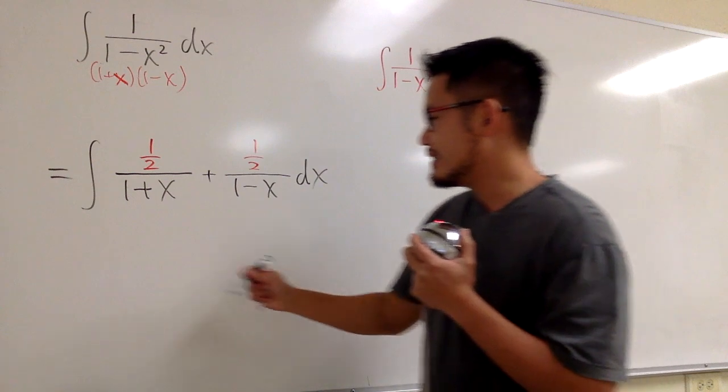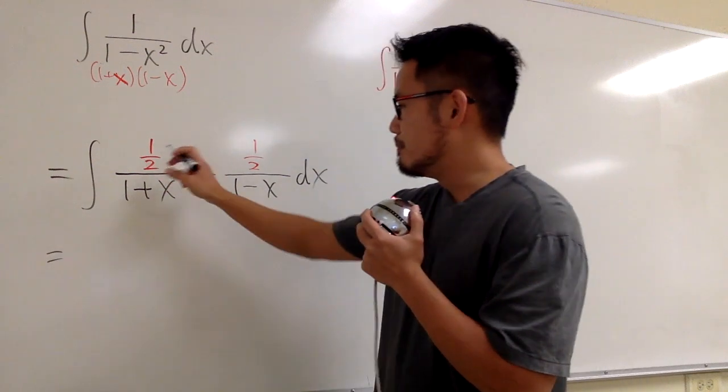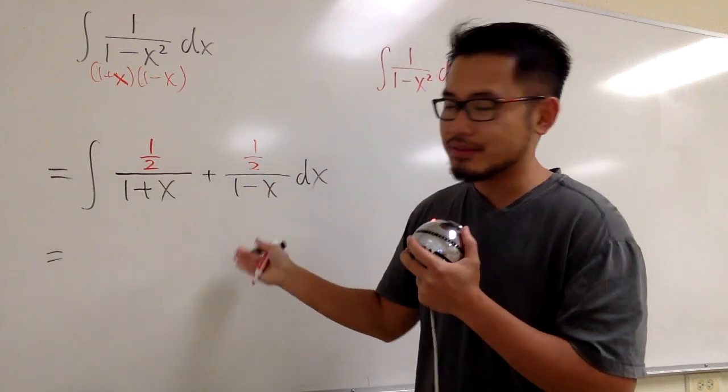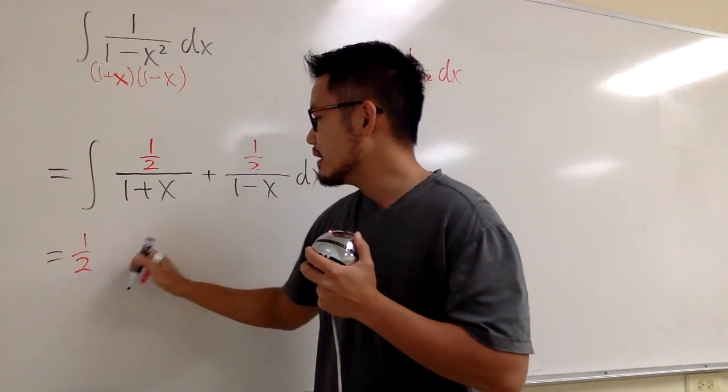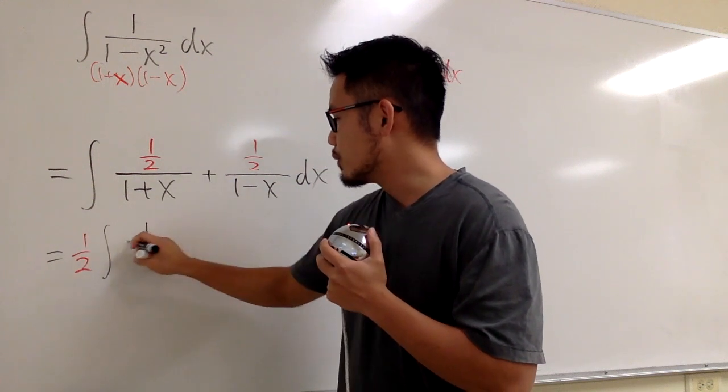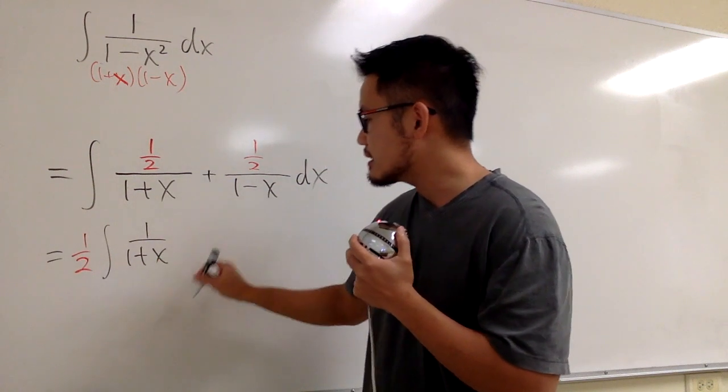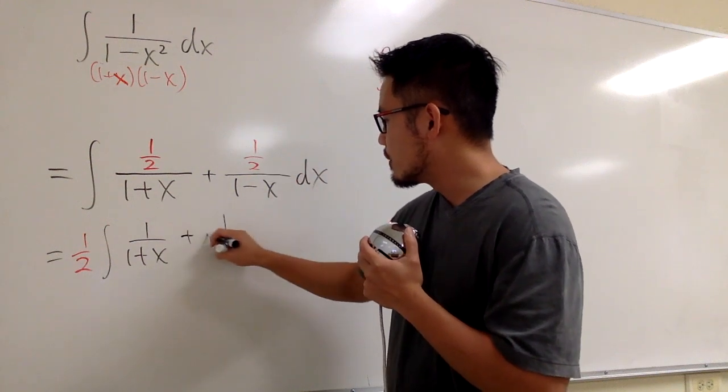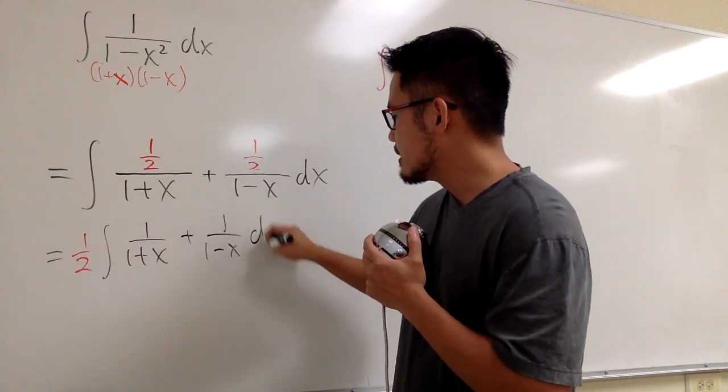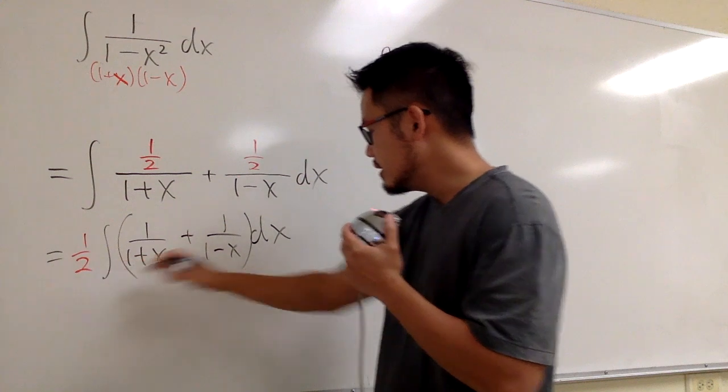Alright, so we are good, and now we can take the 1 half out, because both of them have 1 half. So let me just factor it out to the front, and then we can integrate the first one, which is 1 over 1 plus x, and the second one is plus 1 over 1 minus x, right? So this is the integral we have to do.